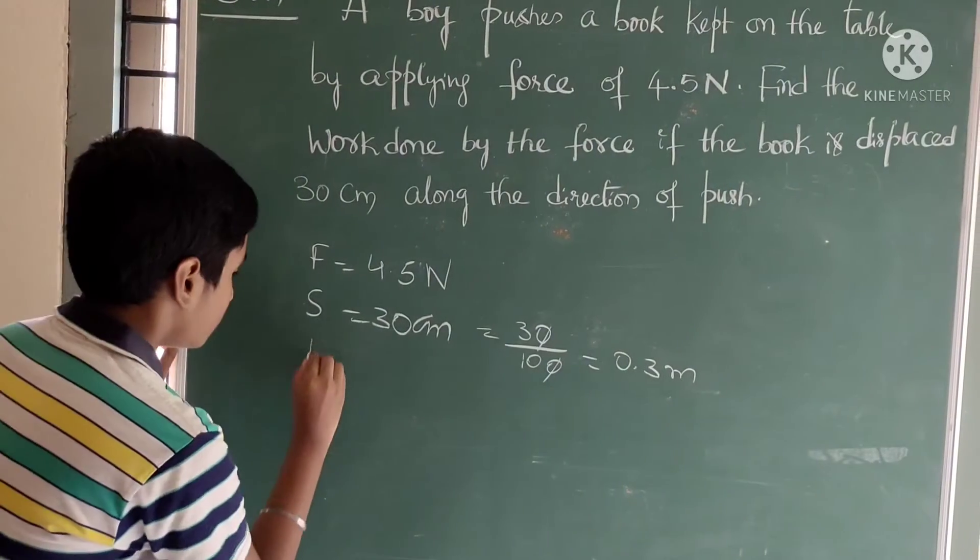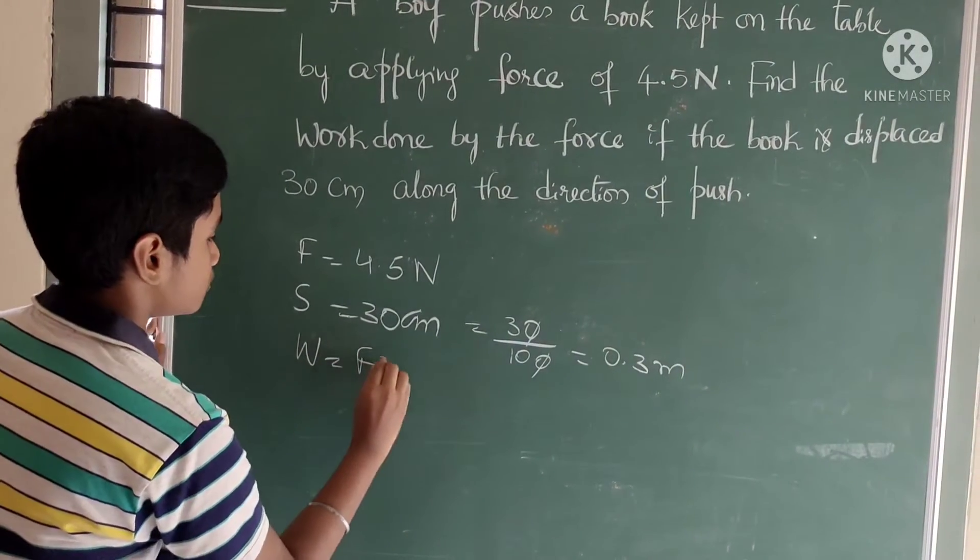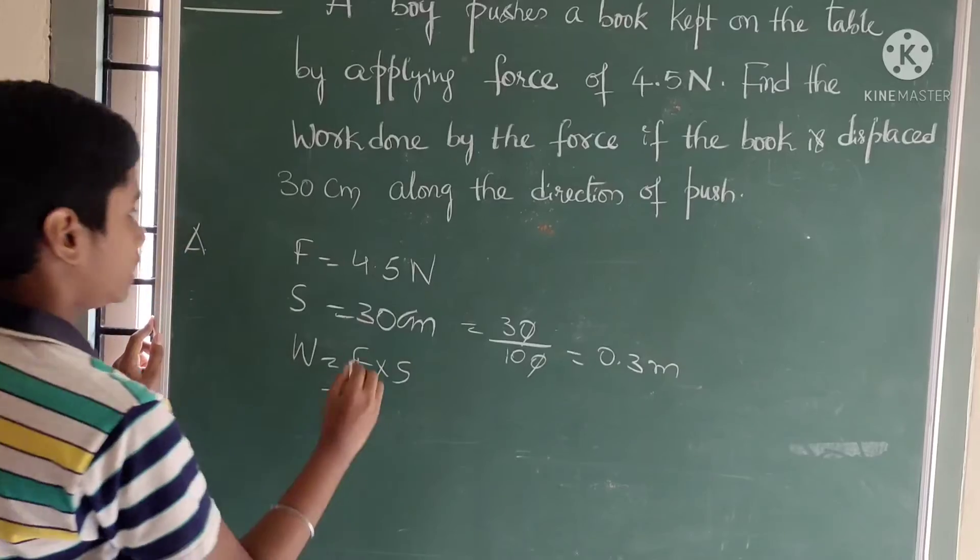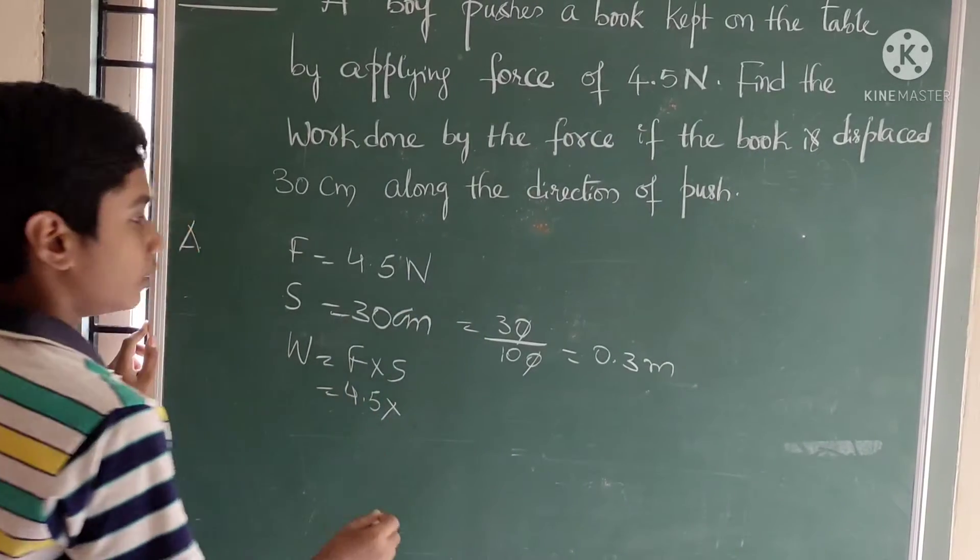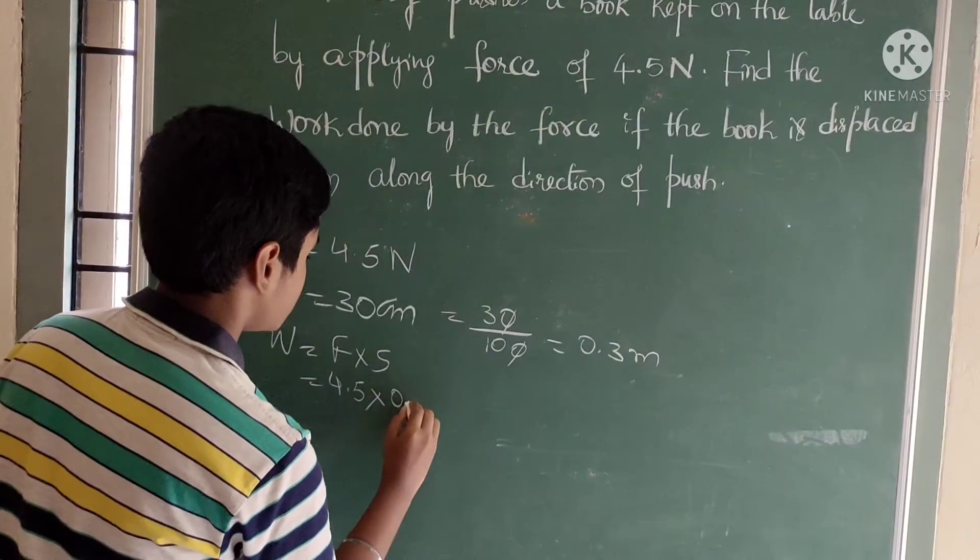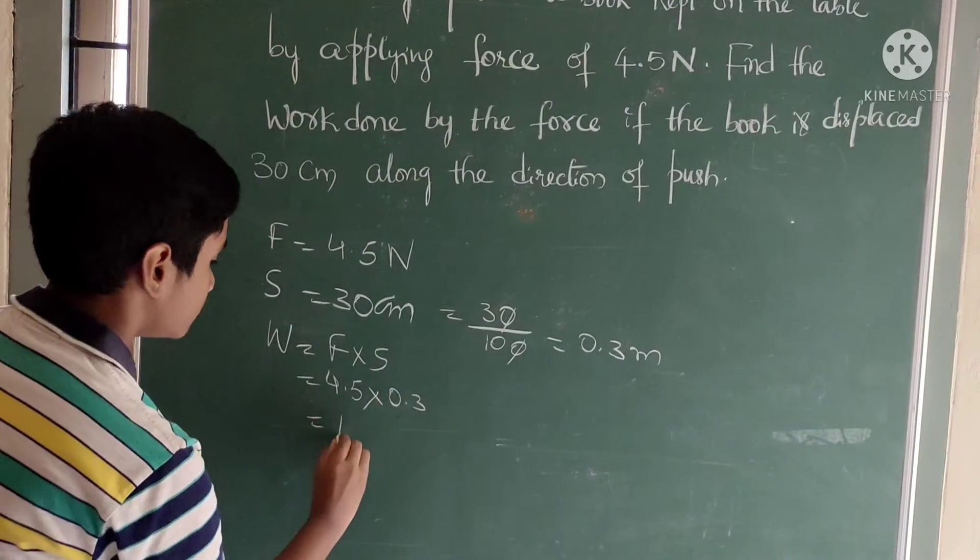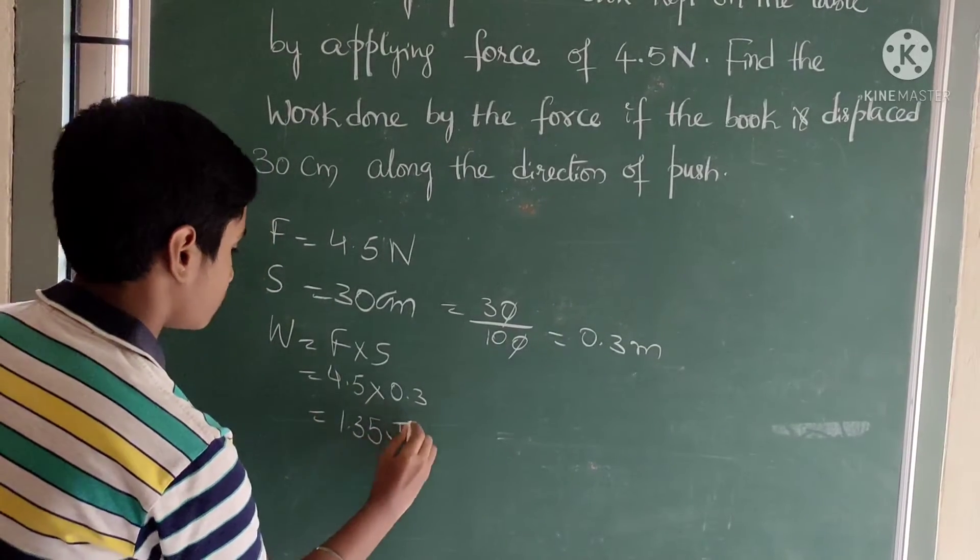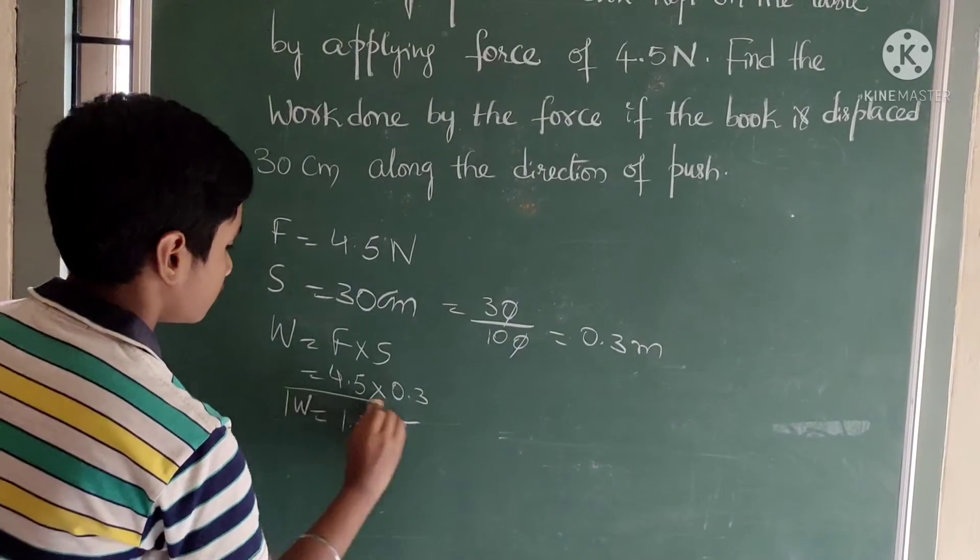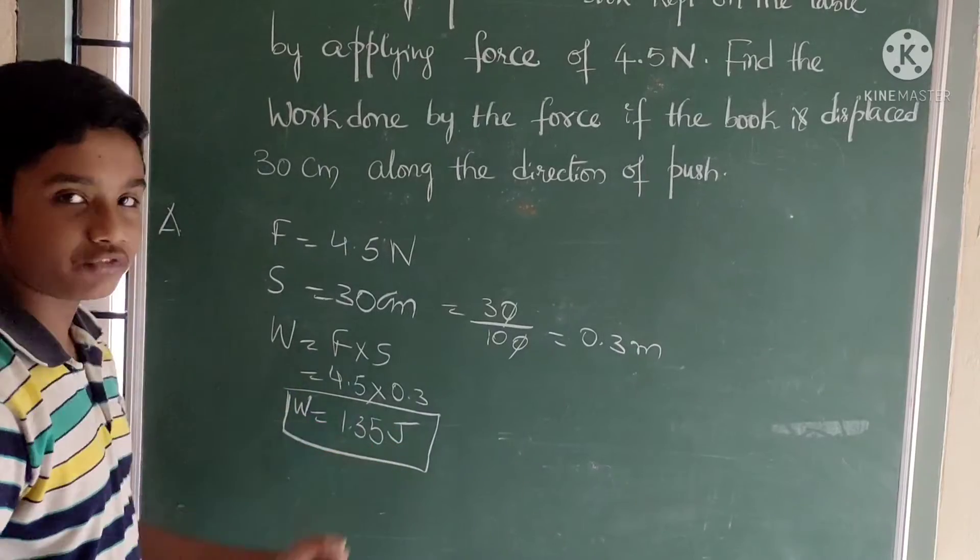We know the formula W equals F into S. Here F is 4.5 into S 0.3. 4.5 into 0.3, that means 1.35. Therefore, we got work done W is equal to 1.35 joules.